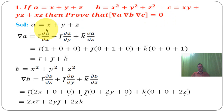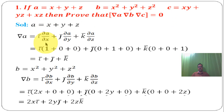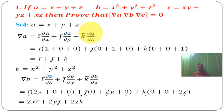Solution: given a = x + y + z. Gradient of a = ī·(∂a/∂x) + j̄·(∂a/∂y) + k̄·(∂a/∂z). Taking partial differentiation: ∂a/∂x = 1, ∂a/∂y = 1, ∂a/∂z = 1. Simplifying, grad a = ī + j̄ + k̄.